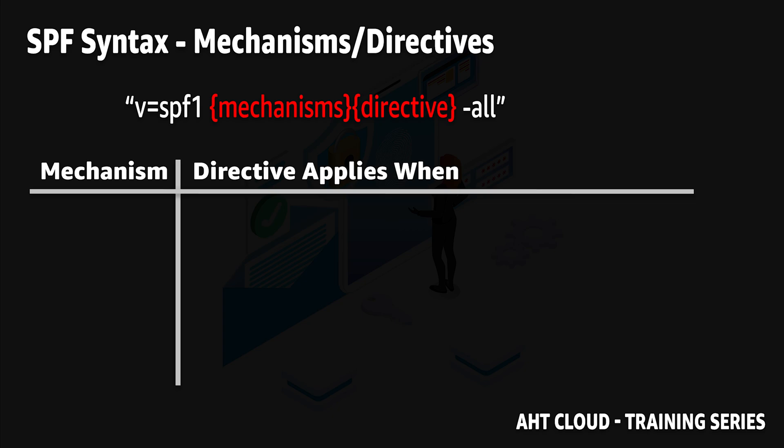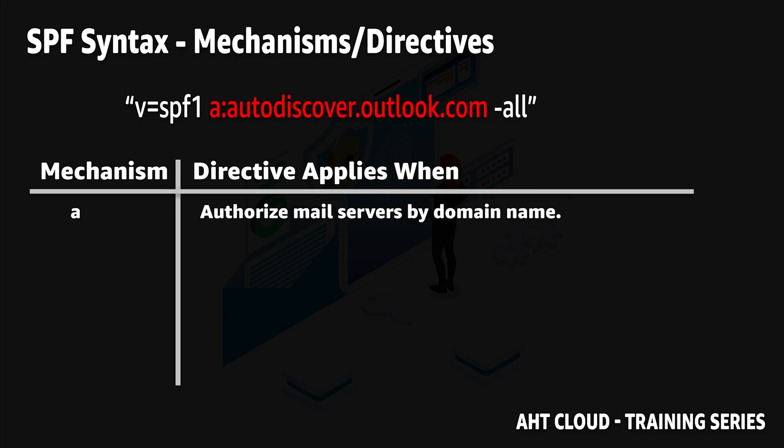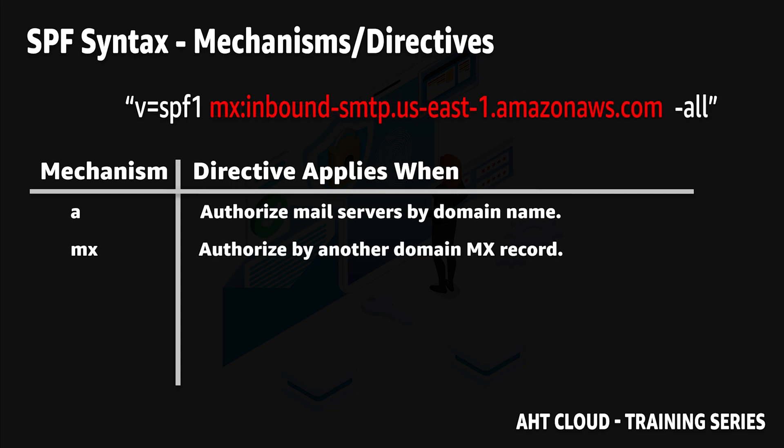You can authorize mail servers by domain name using the letter 'a' as the mechanism. To authorize a domain to send email on your behalf, you write a: followed by the URL name. The second way is by another domain's MX record — you write mx: followed by the domain name where the MX record is stored.